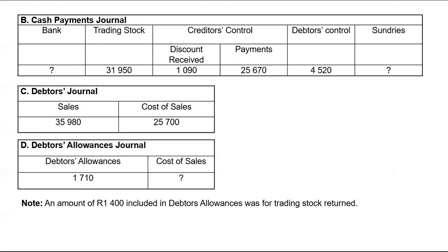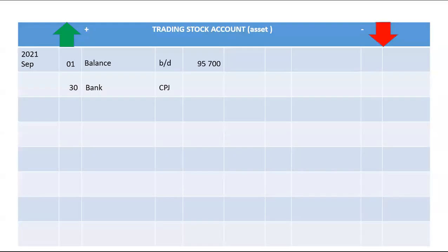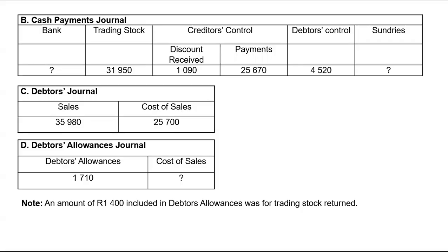The total of trading stock in the CPJ will be 31,980. I will debit my trading stock account by that 31,980 — that is from the CPJ.